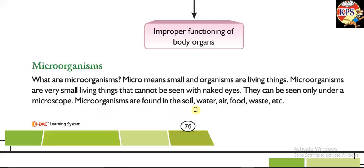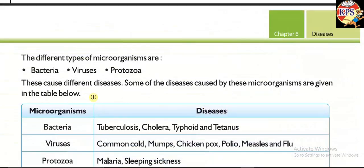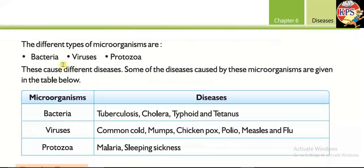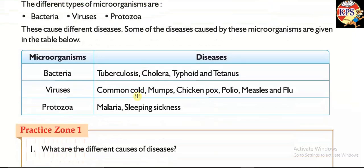Microorganisms are found in soil, water, air, food, waste, etc. There are different types of microorganisms: first is bacteria, second is viruses, and third is protozoa. These cause different diseases, as shown in the table below.